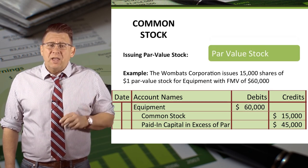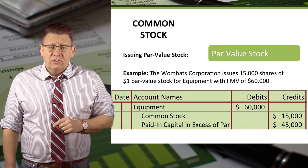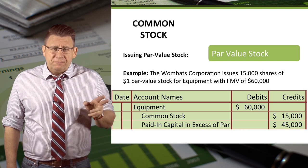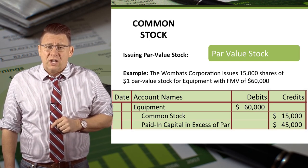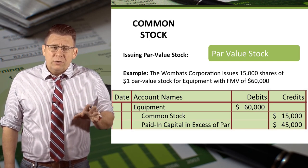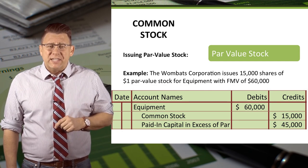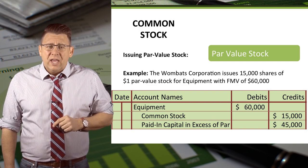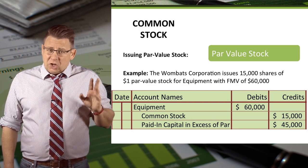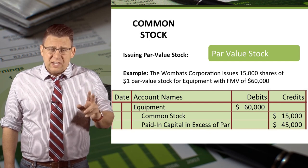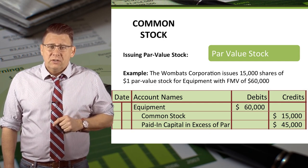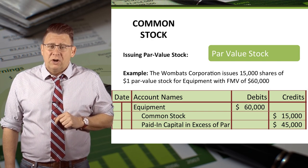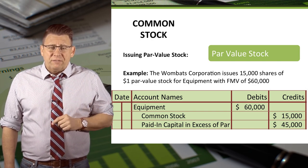Finally, stock can be issued for assets other than cash. In this example, the Wombat Corporation issued 15,000 shares of $1 par value stock for equipment with a fair market value of $60,000. Equipment is debited for $60,000 and common stock is always credited for its par value, which in this case is $15,000. Finally, the difference is credited to paid-in capital in excess of par for $45,000.